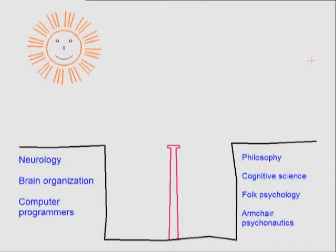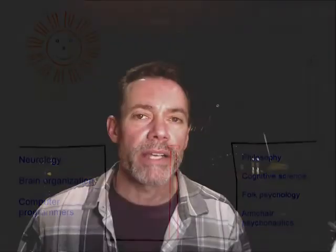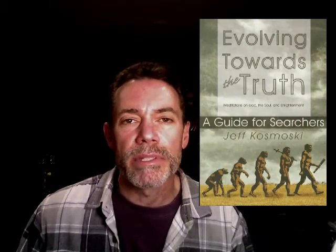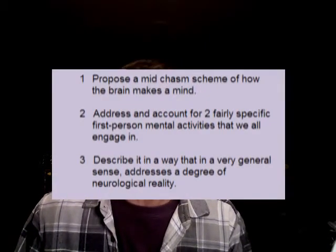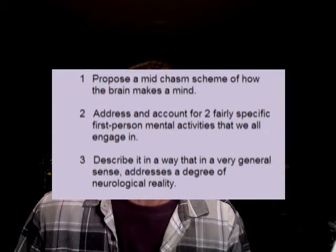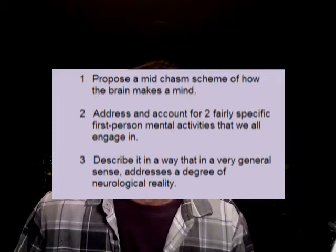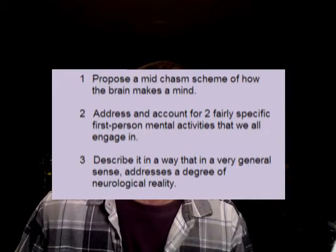A target that is more centrally located in the chasm instead of mere inches away from the neural side. My goal in this video series is to establish a type of center-point target in this explanatory chasm — a general model that starts with the way we think we think and then tries to explain this in a cursory, general neural or connectivist scheme. Any eventual explanation of consciousness needs to be able to address our first-person perspective; if it can't address the way it feels from the inside to think as human beings, it's not going to be very convincing. My goals are: one, propose a mid-chasm scheme of how the brain makes a mind; two, address two fairly specific first-person mental activities that we all engage in; and three, describe it in a way that in a very general sense addresses a degree of neurological reality.